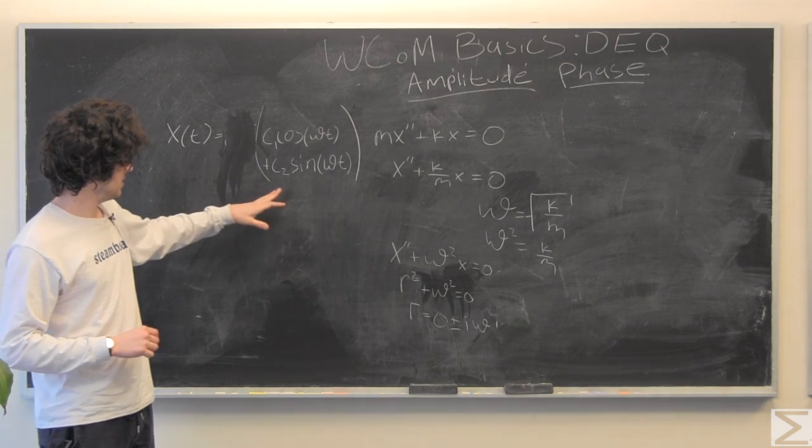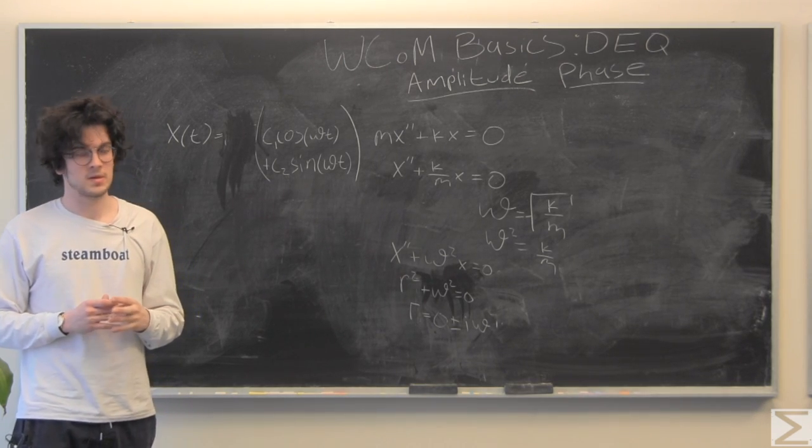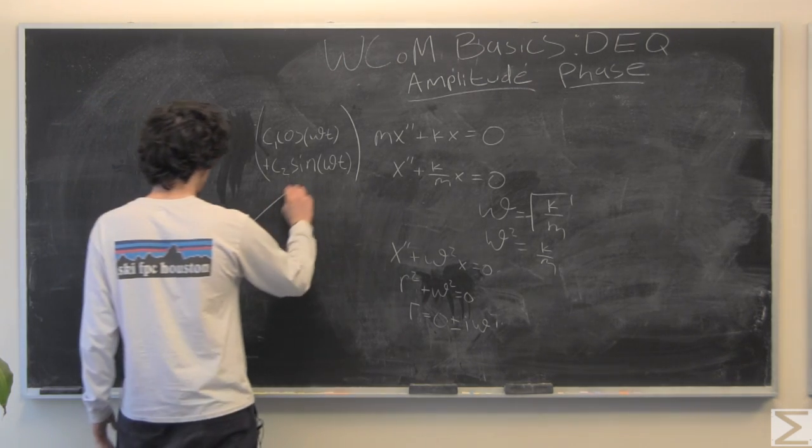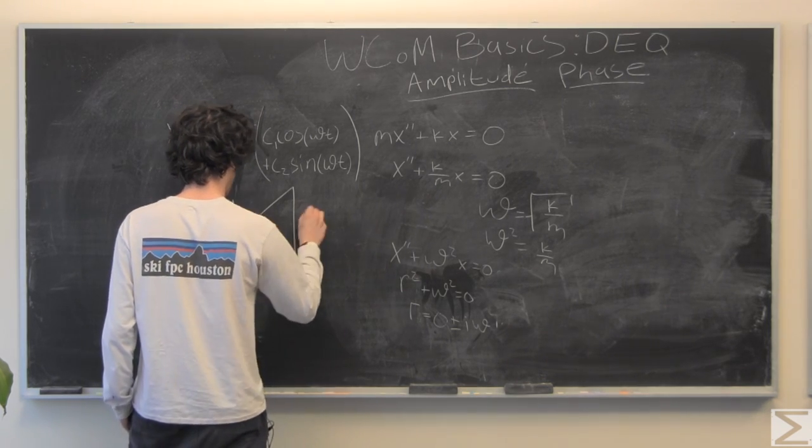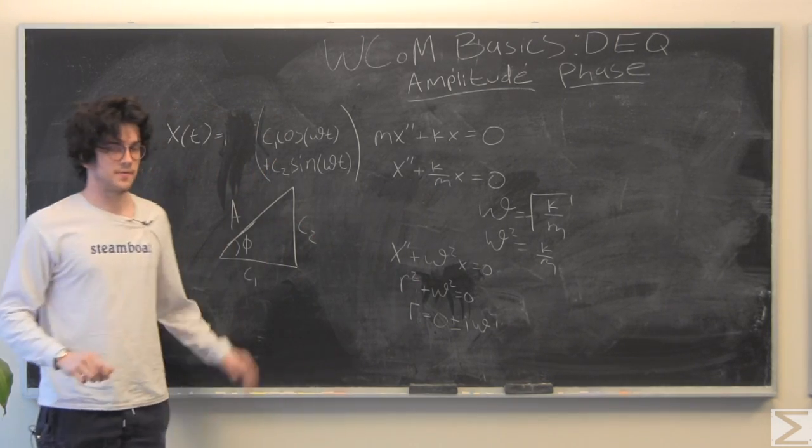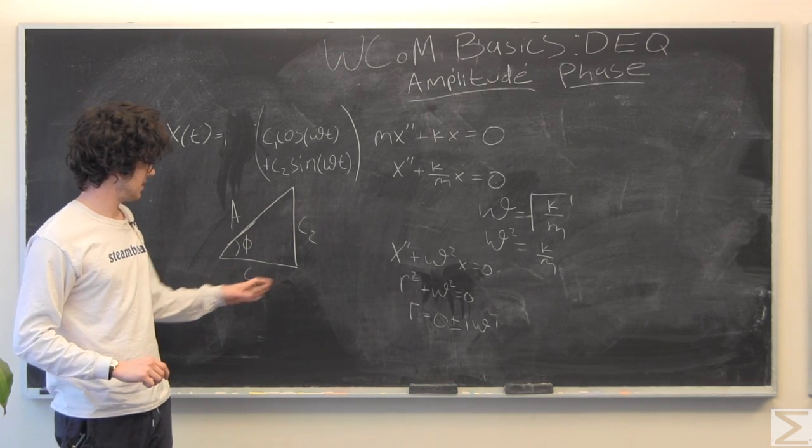So, one thing to notice is that this is like, you might remember, like a triangle from a unit circle. Where we have c1 and c2 on the x and y.